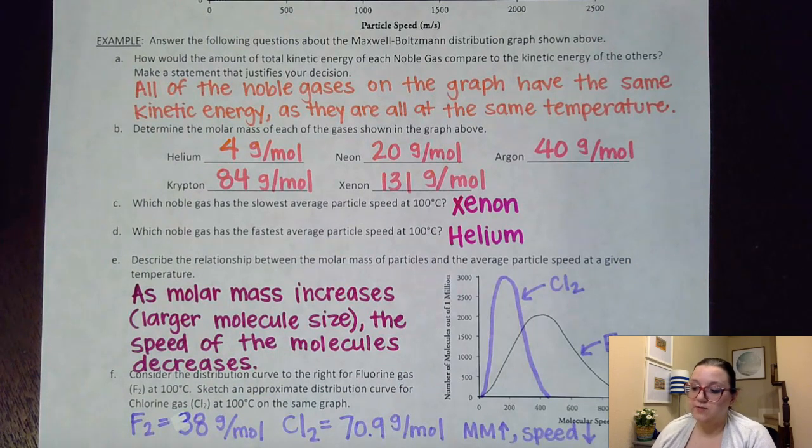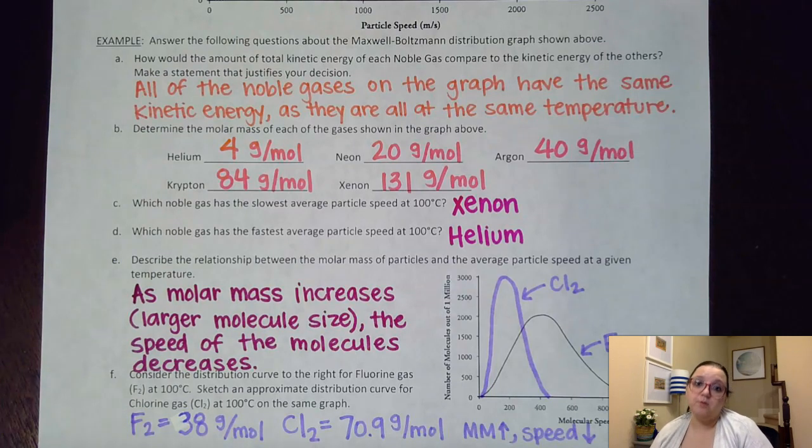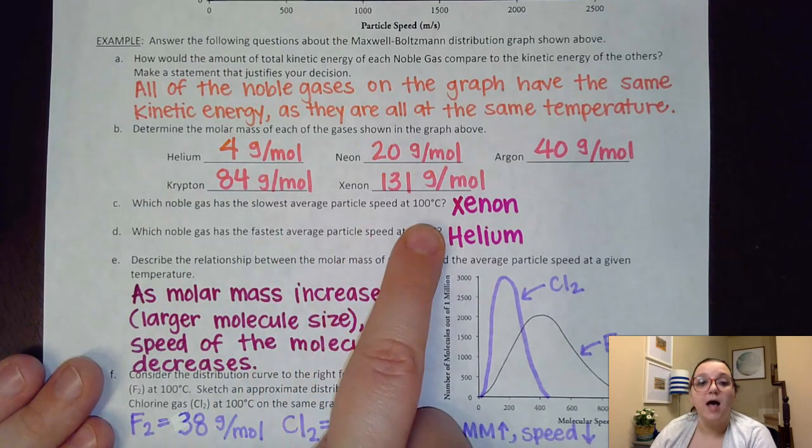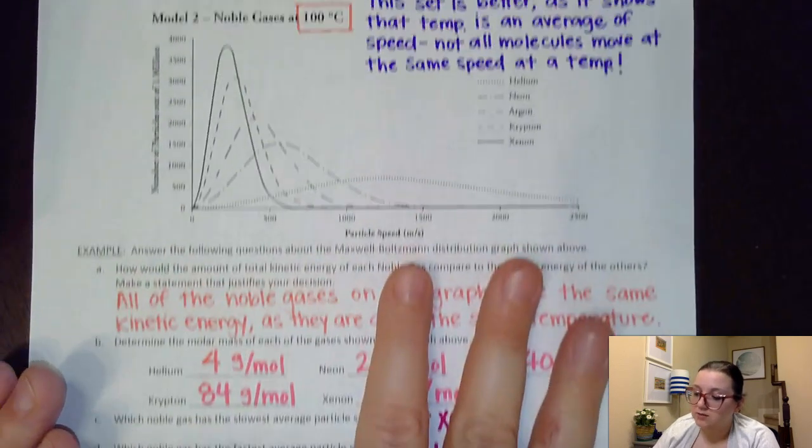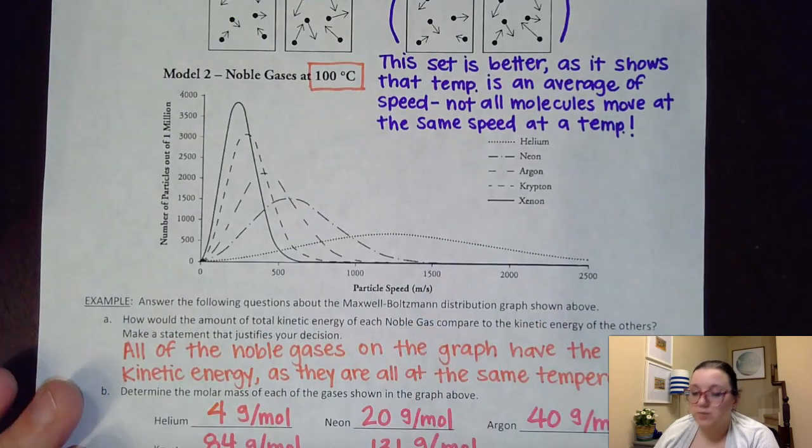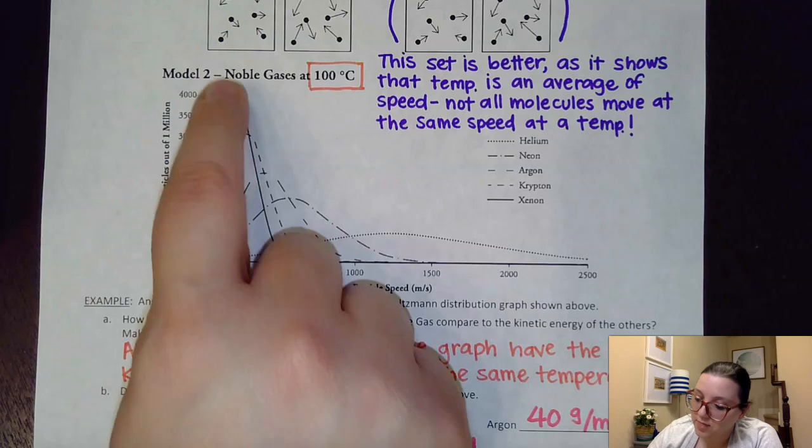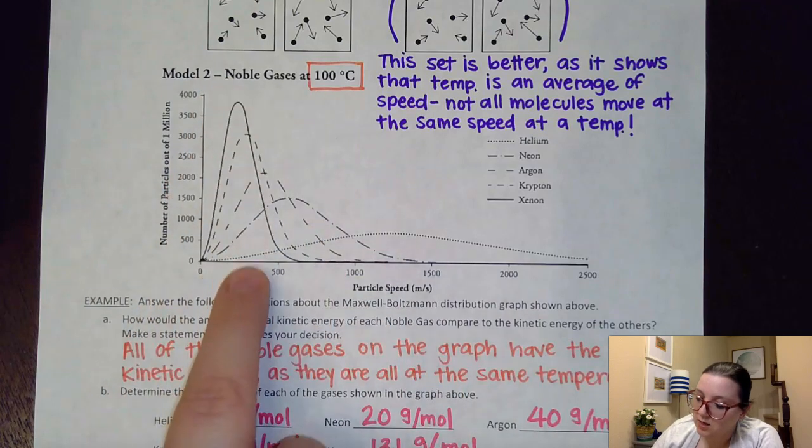So then it said, determine the molar mass of each of the gases shown in the graph above. And I gave kind of a ballpark figure here for each of these. So if you wrote down a more specific molar mass, that's totally fine. I just wrote down enough that I could then answer some of these next questions here. It said, which noble gas has the slowest average particle speed at 100 degrees Celsius? So again, the slowest average speed would be the peak that has shifted more back towards our origin,